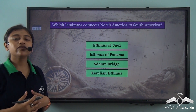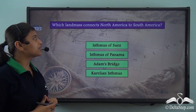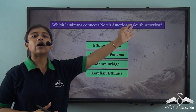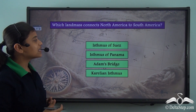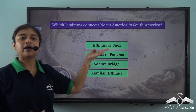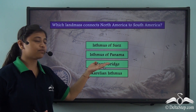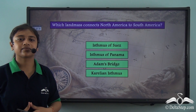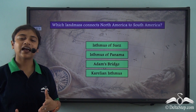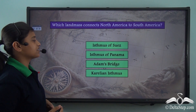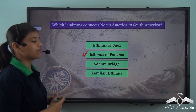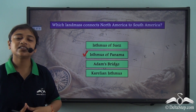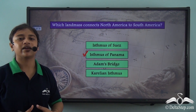Before we proceed, here is a question: which land mass connects North America to South America? Is it the Isthmus of Suez, the Isthmus of Panama, the Adams Bridge, or the Karelian Isthmus? The correct answer is the Isthmus of Panama — the narrow stretch of land that connects the two continents of North America and South America.